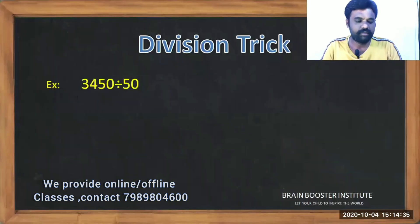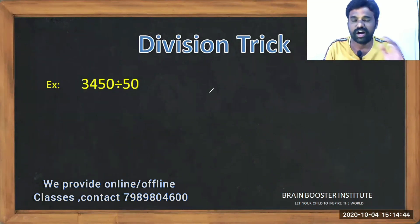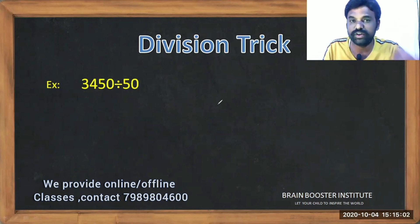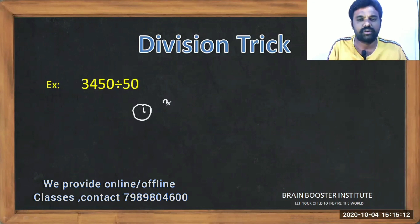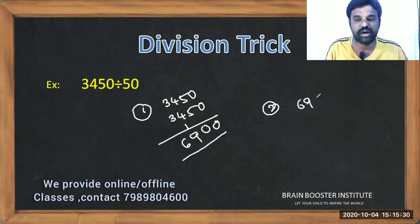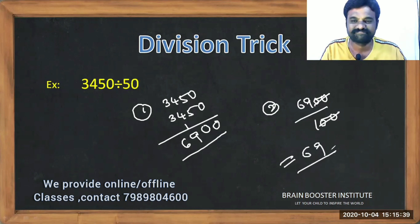Example: 3450 divided by 50. Since 50 is half of 100, step one is the same — add 3450 to itself: 0+0=0, 5+5=10, 4+4=8+1=9, 3+3=6, giving 6900. Step two — instead of dividing by 10, we now divide by 100 because 50 is half of 100. So 6900 divided by 100 equals 69. Awesome!